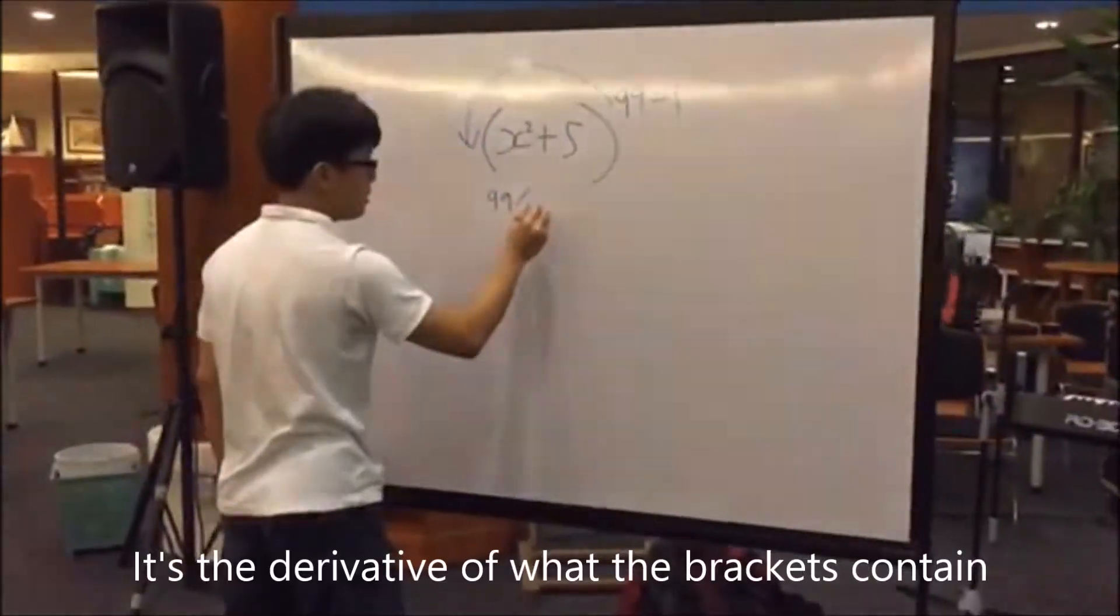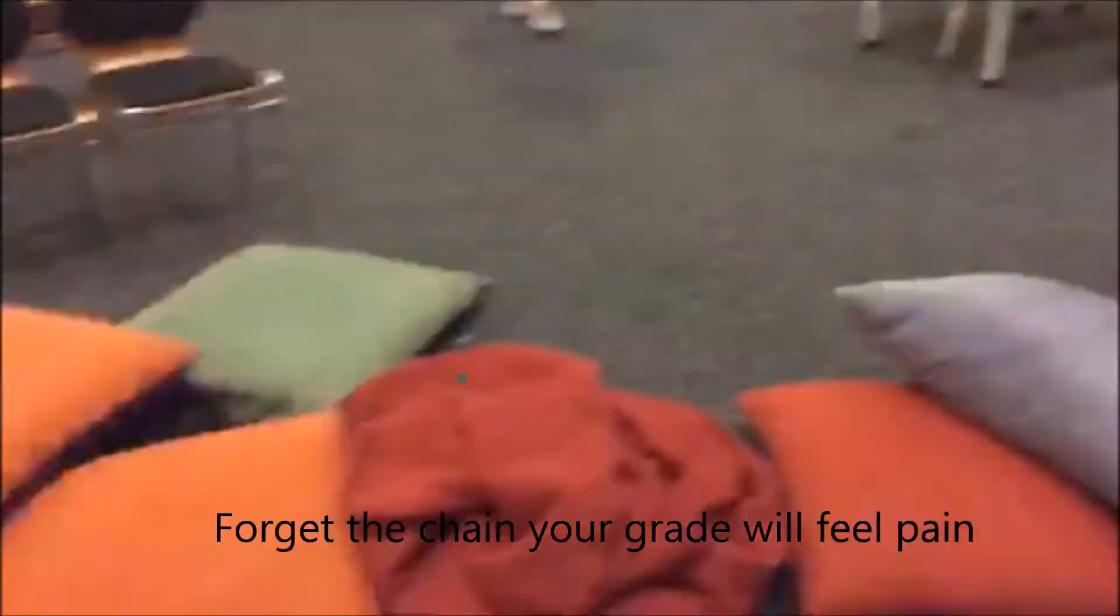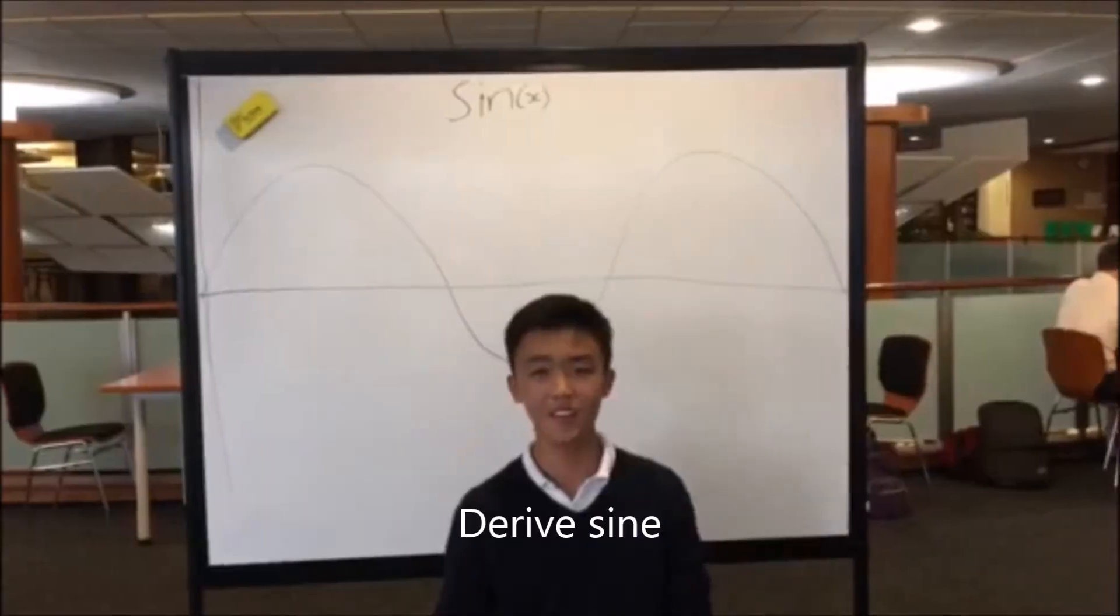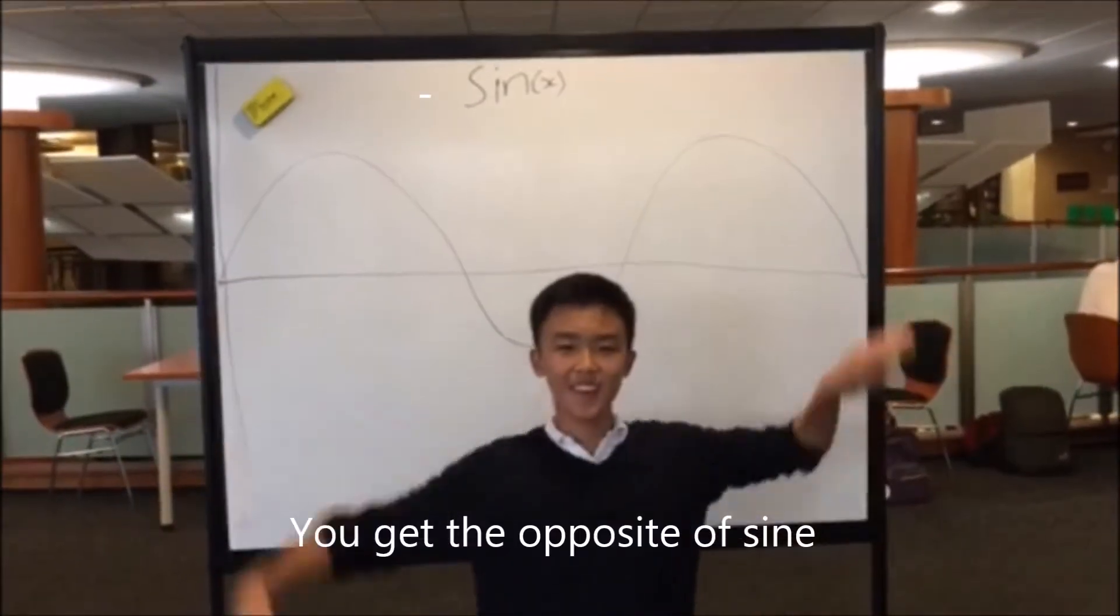Remember also to take the chain. It's a derivative of what the brackets contain. Forget the chain, you're great and still pain. Sine or cosine, just have to use your brain. Derive sine, you get cosine. Derive cosine, get the opposite of sine.